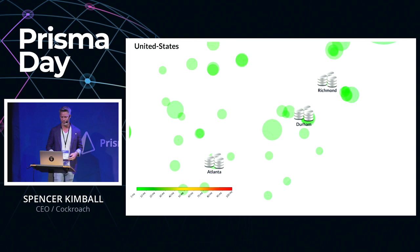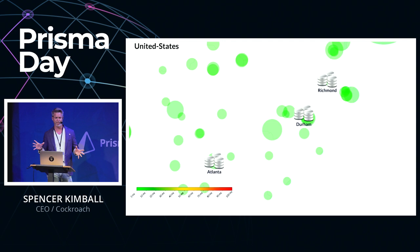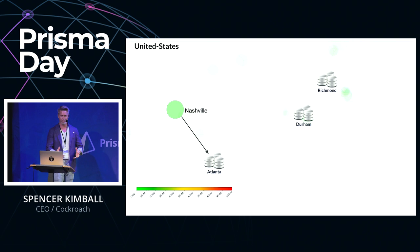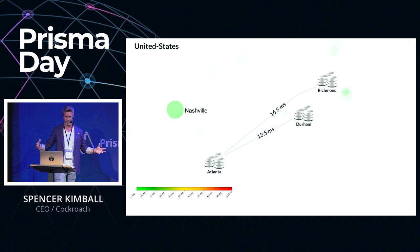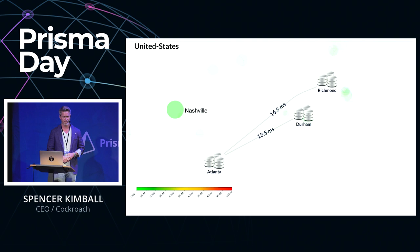Effectively, you're saying I need the majority of my replication sites to be available and I can lose the minority. In this example, we have a three data center deployment on the East Coast of the United States with a user from Nashville. They find the closest data center, and if there's a write involved, it must be replicated to at least one additional data center — two out of three. If Richmond and Durham are both up, it takes 13.5 milliseconds. If Durham goes away, it falls back to Richmond at 16.5 milliseconds. Negligible additional latency, but you have complete business continuity.